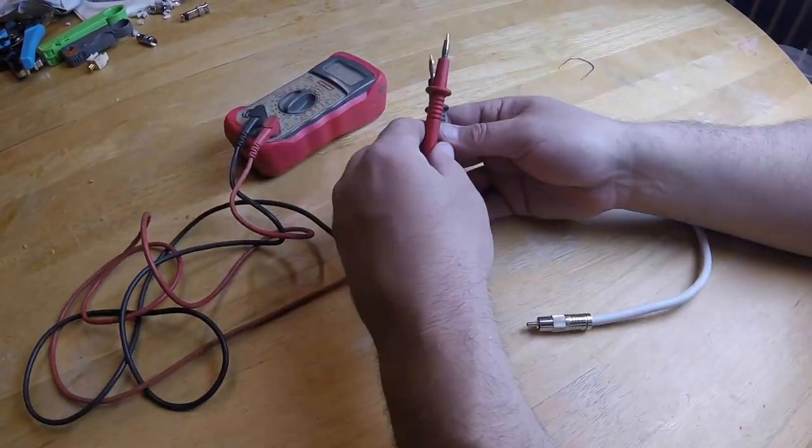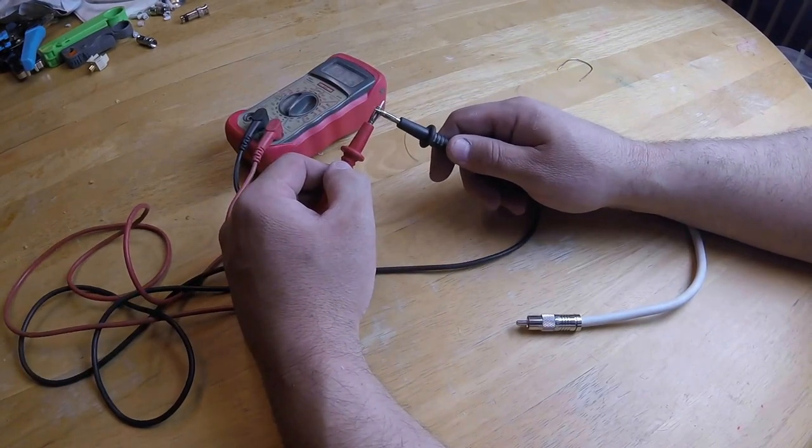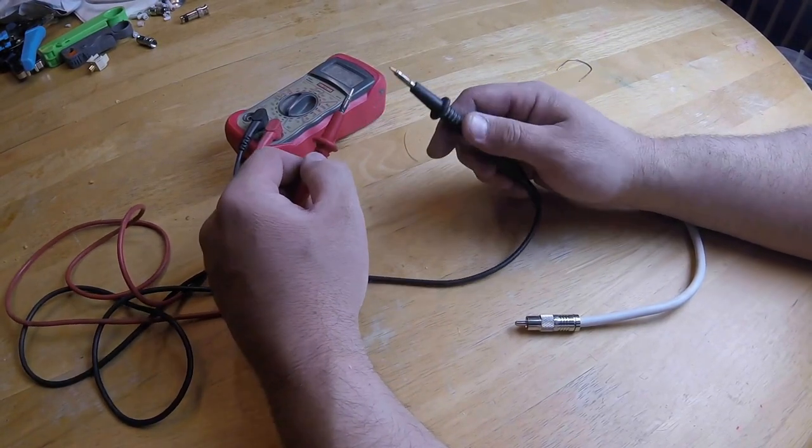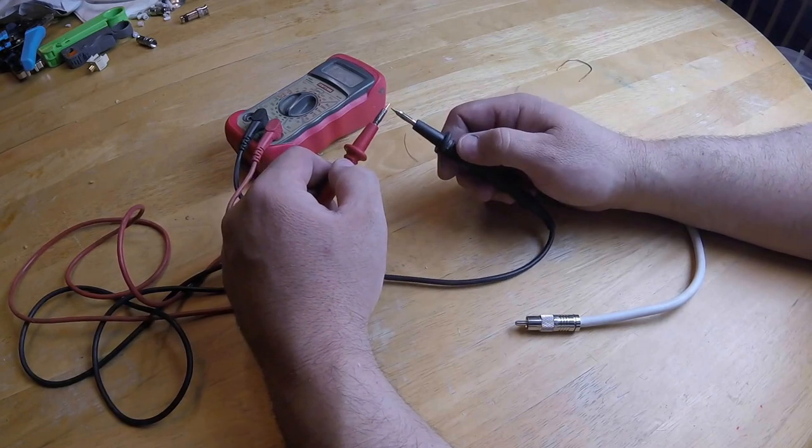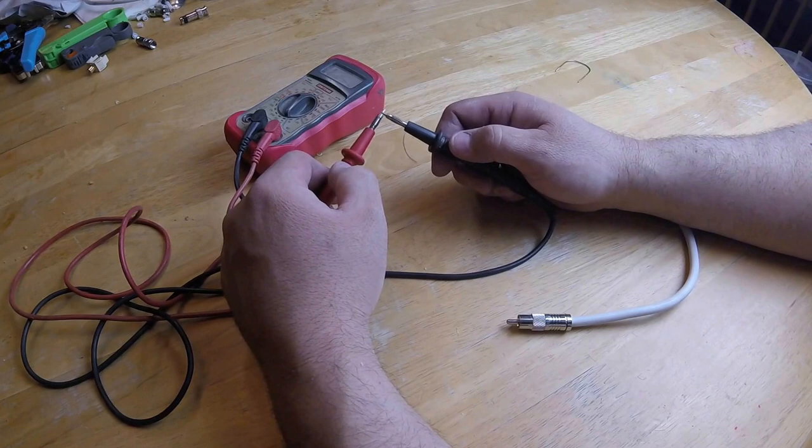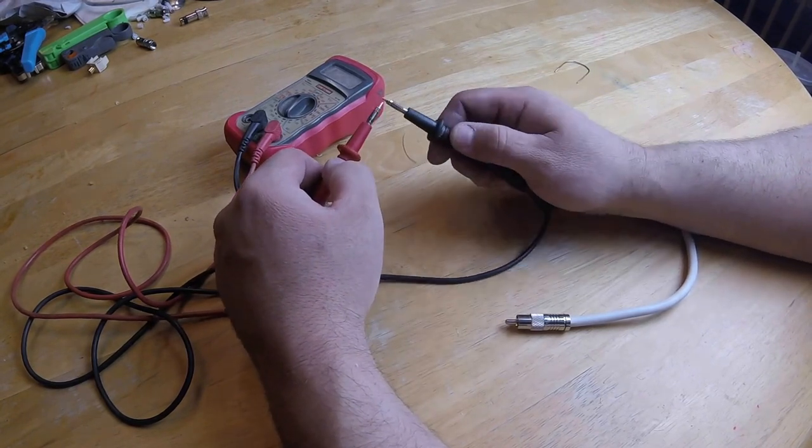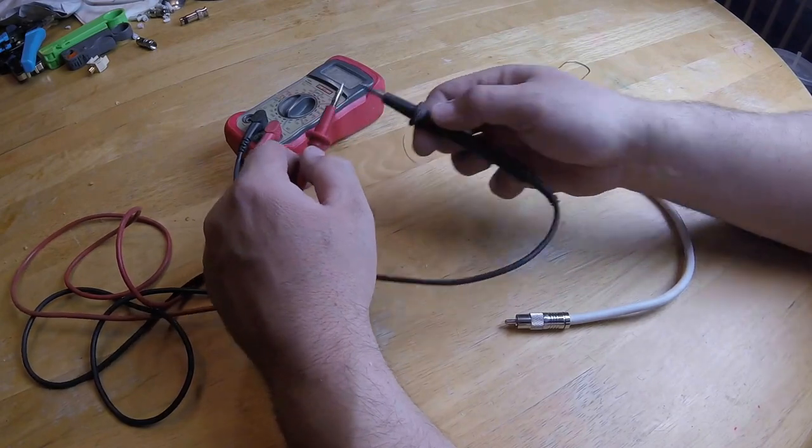Anytime that these leads touch each other, you can hear that beep. That's called a short. Okay, my meter kind of sucks, but the newer meters will have a good strong beep. Mine's kind of wimpy, but you can hear it every time the needles touch. Every time there's a short you hear the beep.